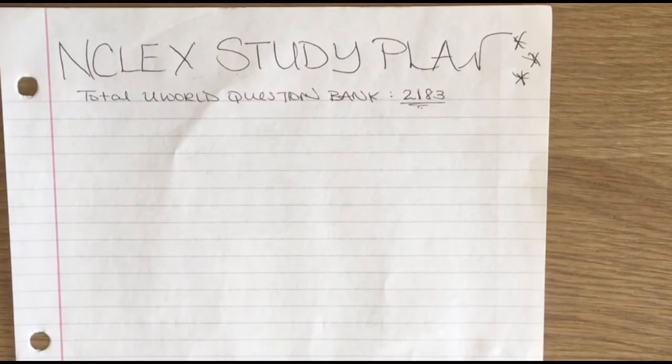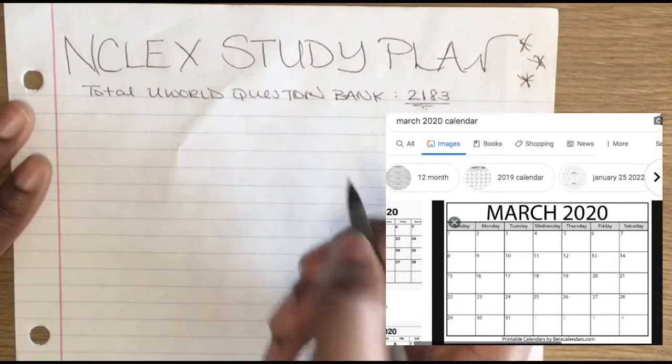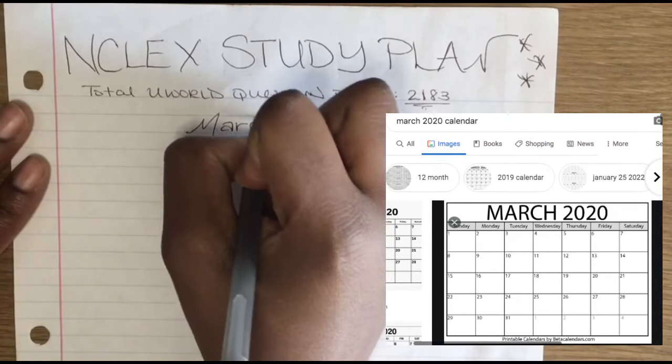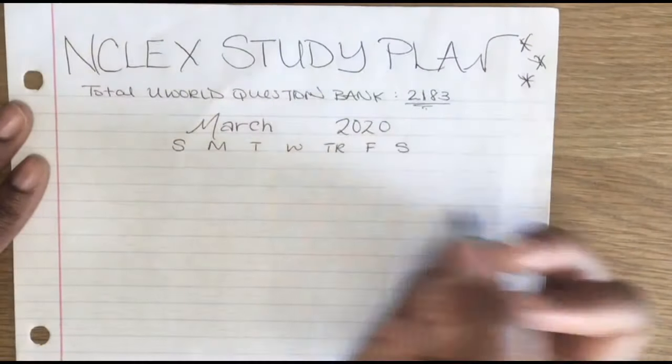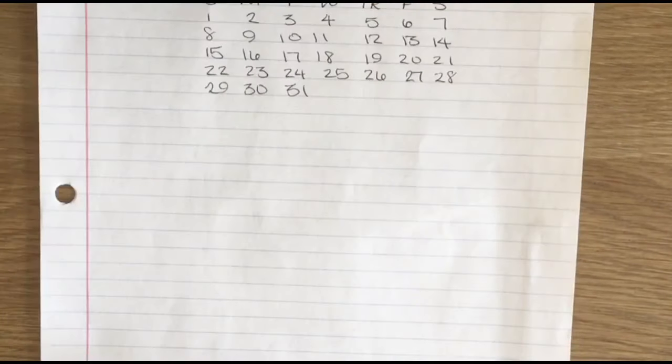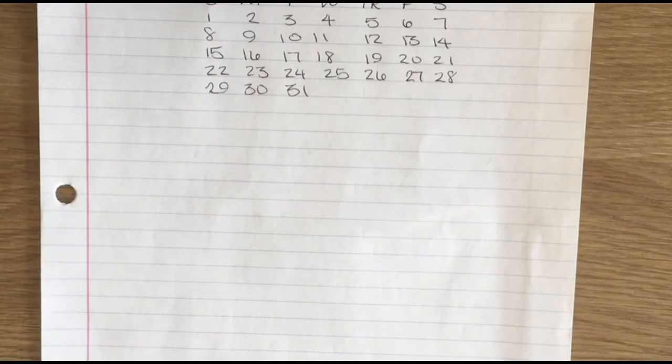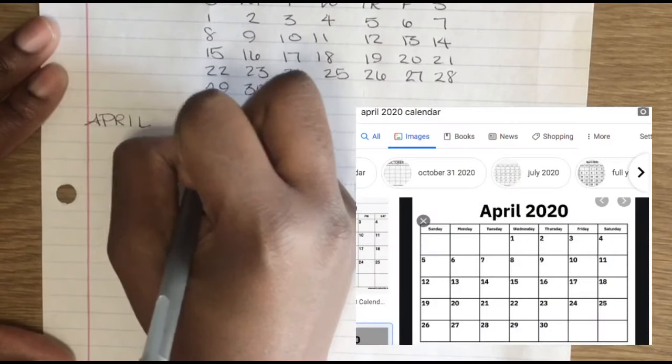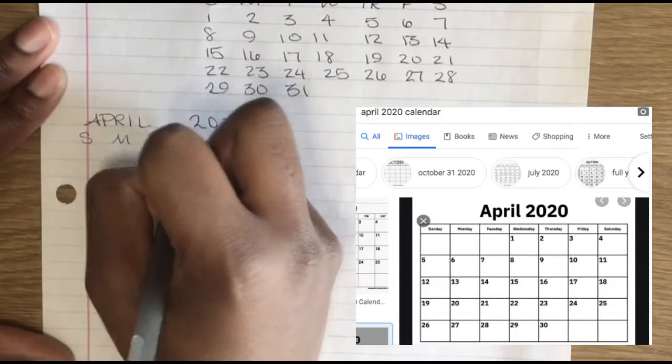So you're going to start writing out the months that you plan to study. Use your calendar, your planner, or your computer to look up or Google the month you're going to start. You'll just write out all the months that you plan to study up until your test date. My test date was in the beginning of May, so I'm going to write out all of April and then all of May as well.